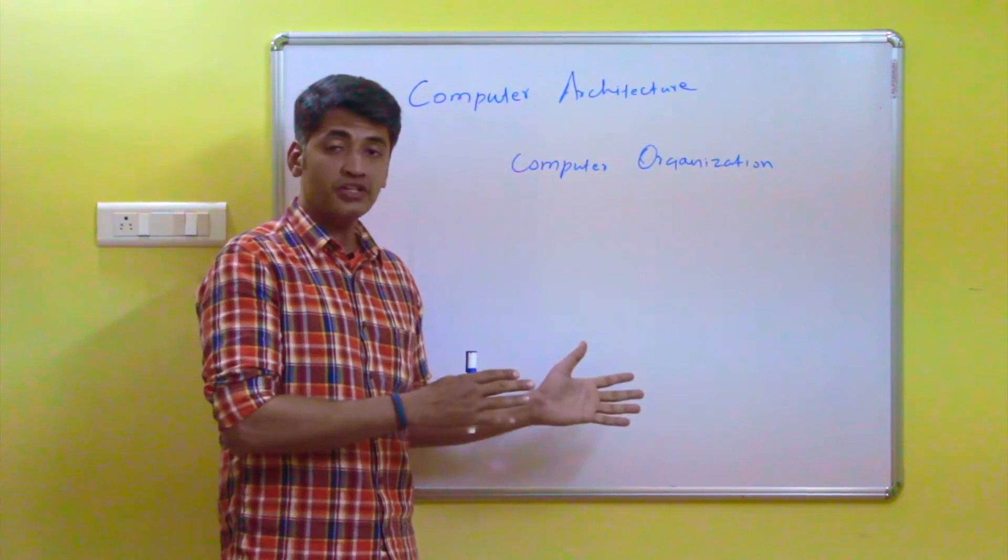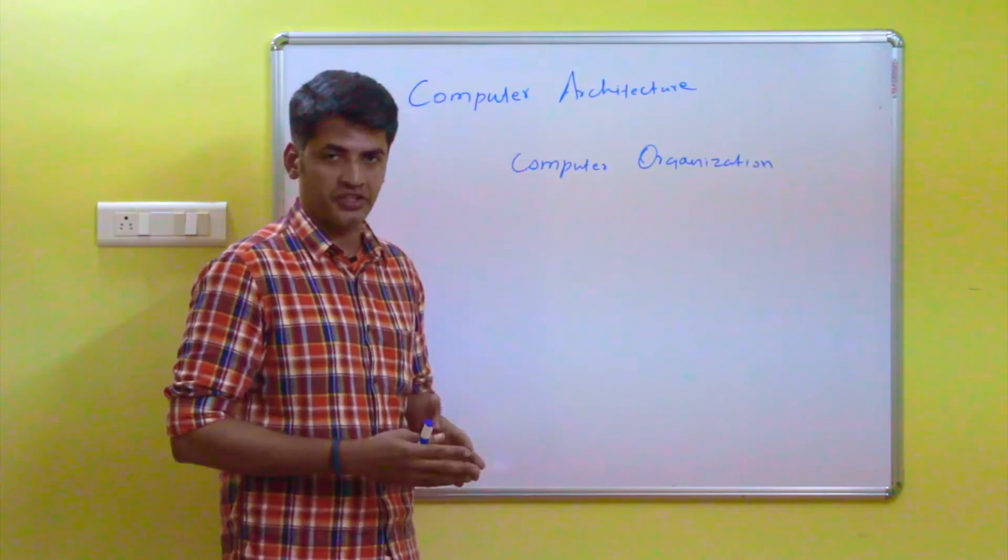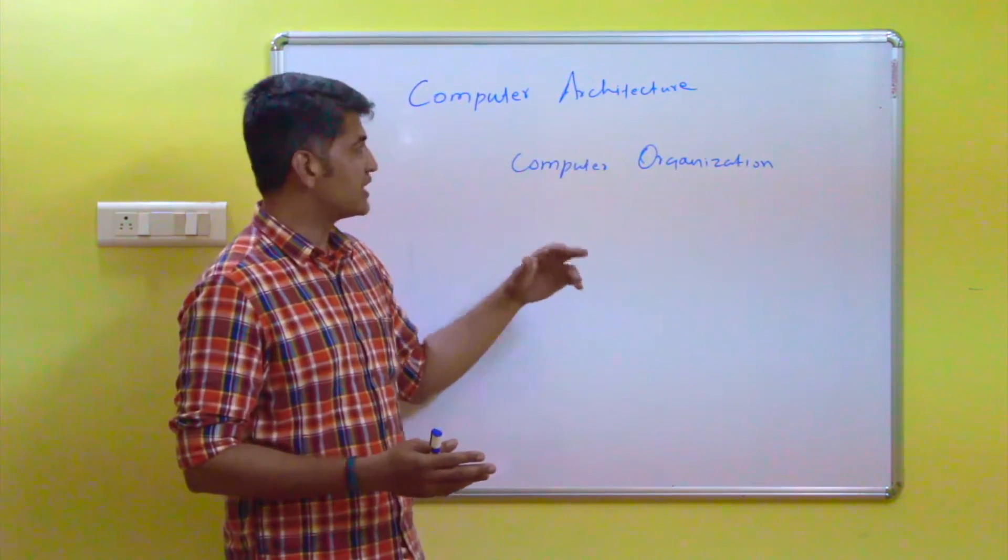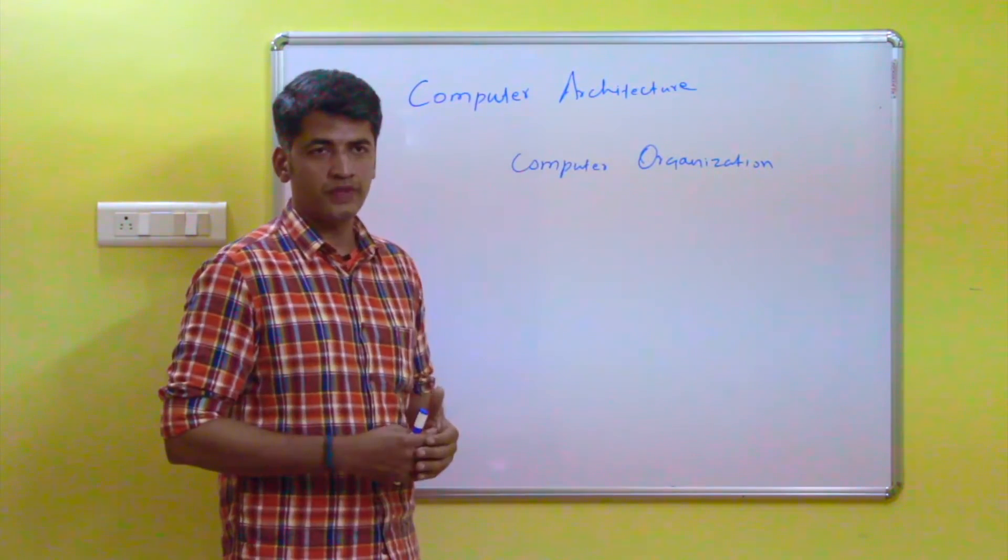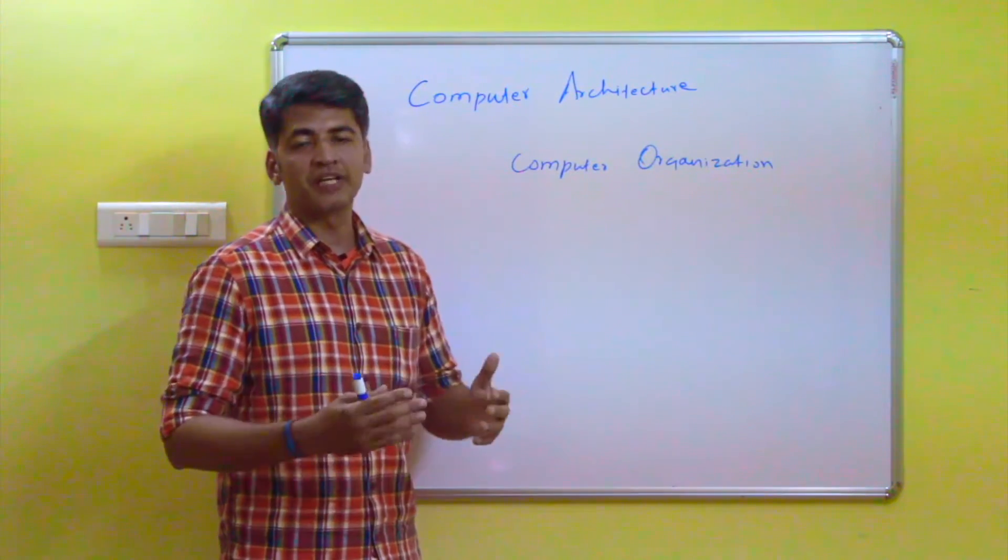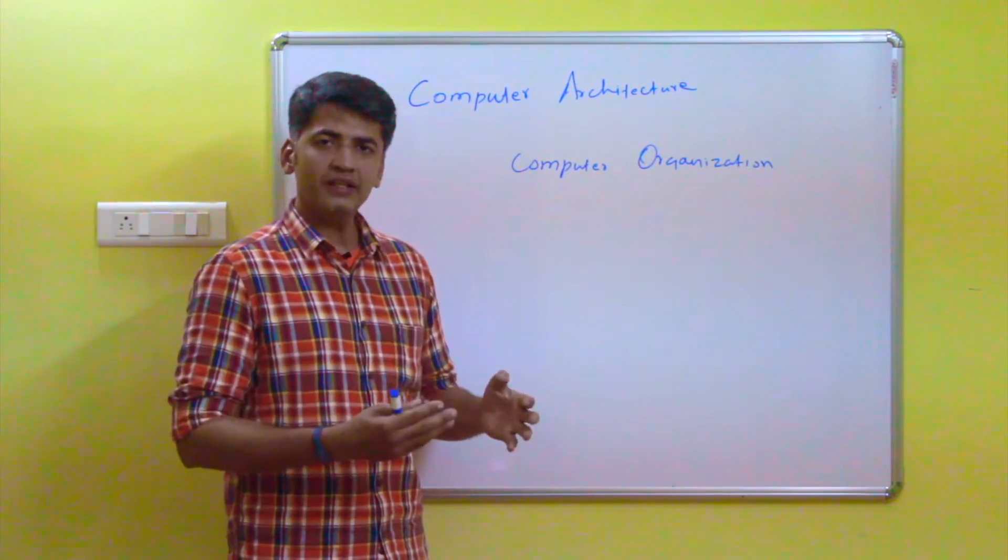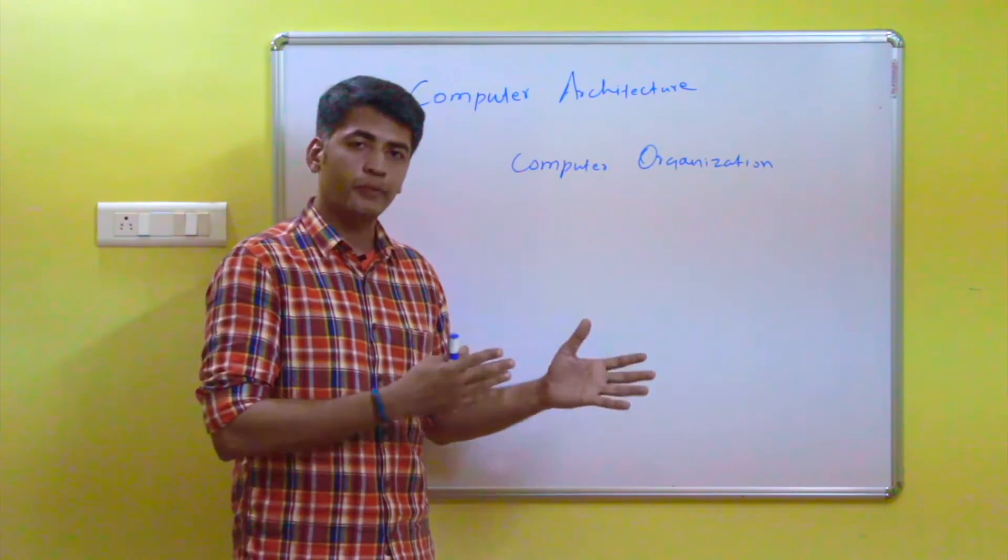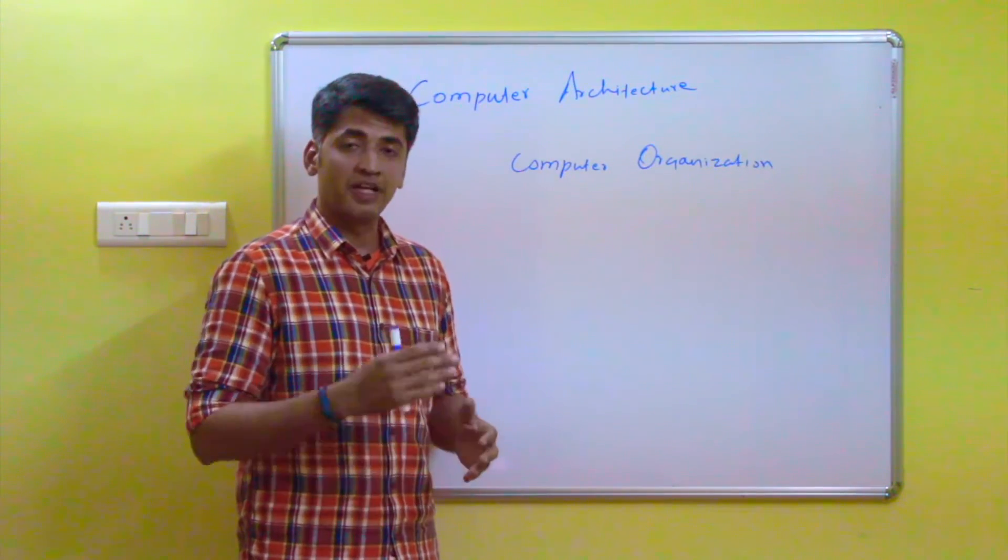refers to the operational units and their interconnections. For example, how can you put the difference between architecture and organization? Consider the multiplication operation. Whether your system will support or whether your processor will support the multiplication